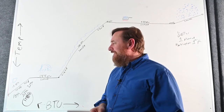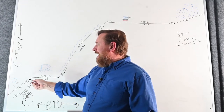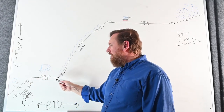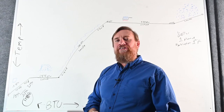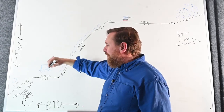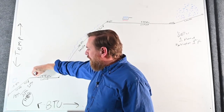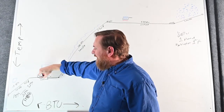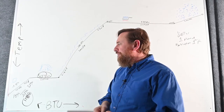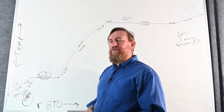The next step is easy. To make that ice go from 32°F solid to 32°F liquid, that's going to be 144 BTUs — we already know that. We're just going to circle 144 BTU.